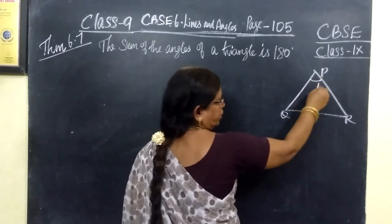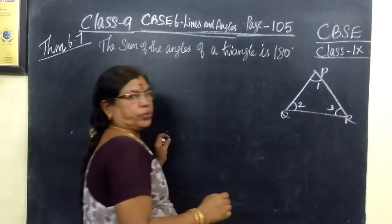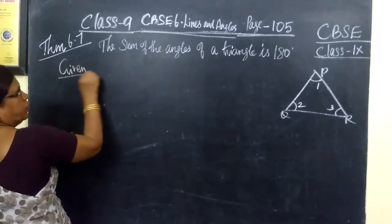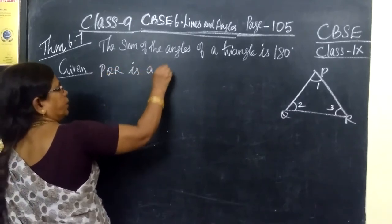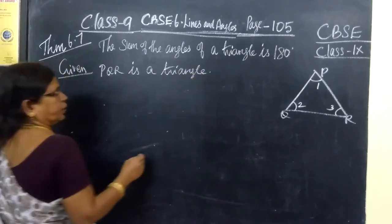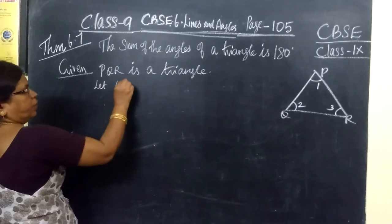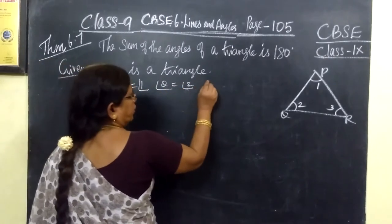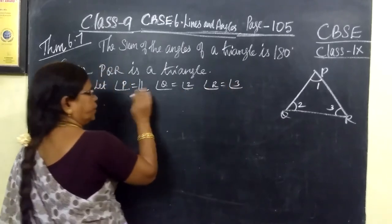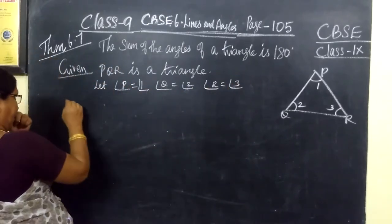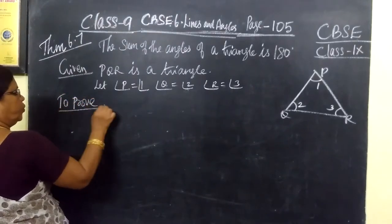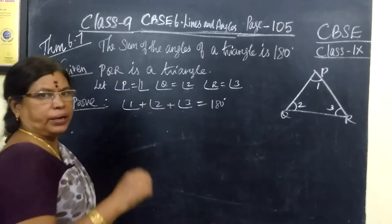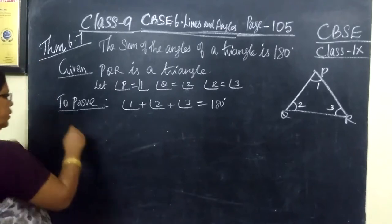We want to prove this. Name the angles as 1, 2, and 3. We have to prove angle 1 plus angle 2 plus angle 3 equals 180 degrees. Given: PQR is a triangle, with angle P equal to 1, angle Q equal to 2, and angle R equal to 3. To prove: angle P plus angle Q plus angle R equals 180 degrees.